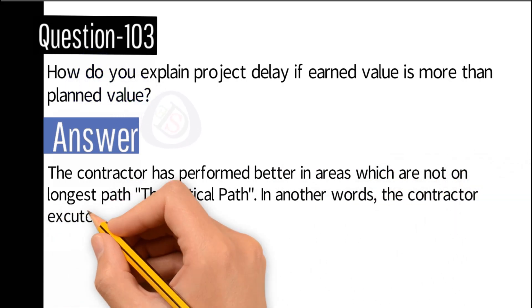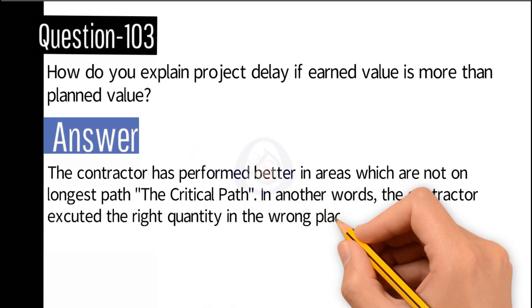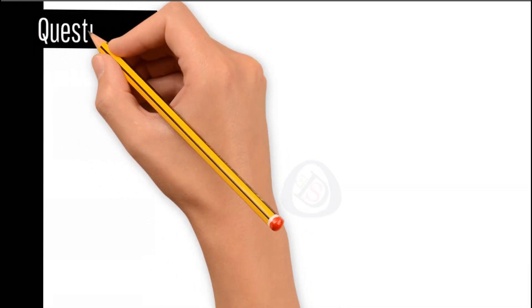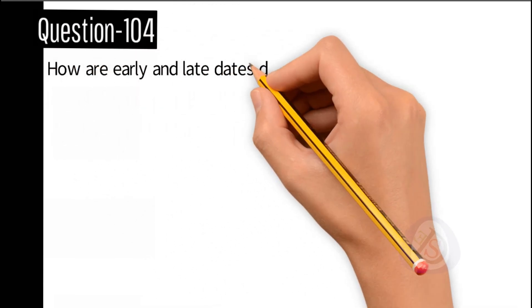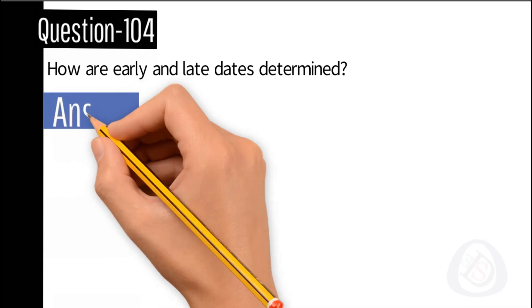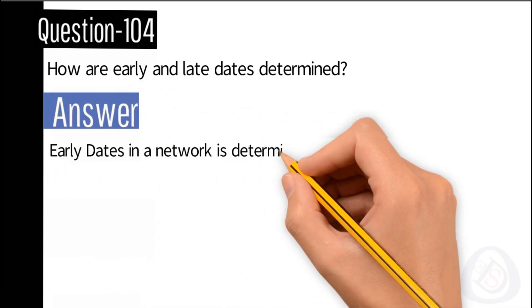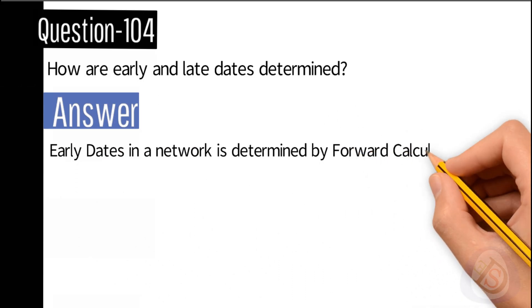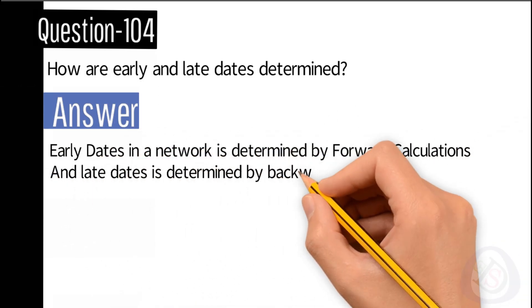Question number 104: How are early and late dates determined? Answer: Early dates in a network are determined by forward calculations, and late dates are determined by backward calculations.